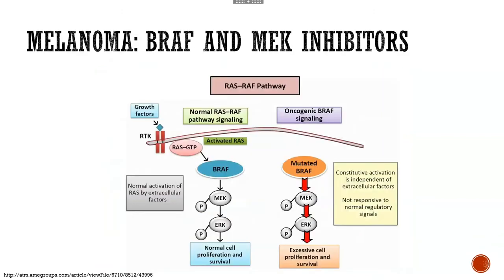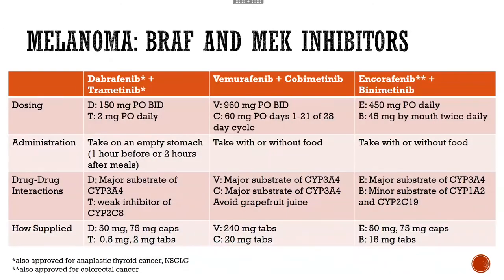Throughout the solid tumor oral cancer therapy section, I've taken some of the disease states and more common drugs you might see and done a brief review. The first disease state is melanoma with the BRAF and MEK inhibitors — not saying those therapies can't be used in other indications, but the first indication was for melanoma. As you can see in this pathway picture, if a patient's tumor is BRAF-mutated, the patient can qualify for a BRAF and a MEK inhibitor. We have three different sets of drugs: dabrafenib and trametinib, vemurafenib and cobimetinib, and encorafenib and binimetinib.